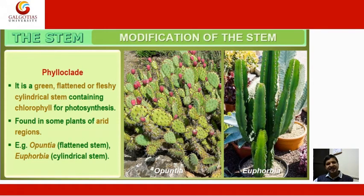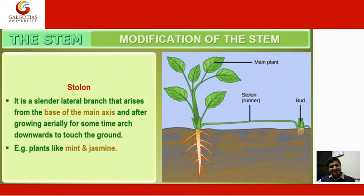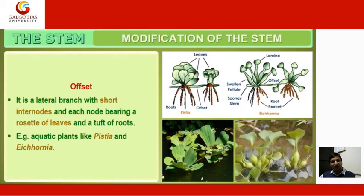Phylloclades are green, flattened or fleshy cylindrical stems containing chlorophyll for photosynthesis, found in some xerophytic plants. Stolons are slender lateral branches that arise from the base of the main axis and after growing aerially for some time arc downwards to touch the ground; examples include mint and jasmine. Offsets are lateral branches with short inter-nodes, each node bearing a rosette of leaves and a tuft of roots; examples are aquatic plants like Pistia and Eichhornia.